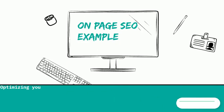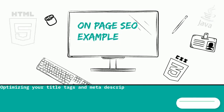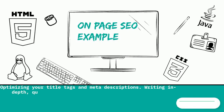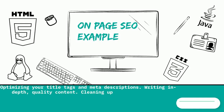Examples of some on-page SEO action items include optimizing your title tags and meta descriptions, writing in-depth quality content, and cleaning up your site's code.